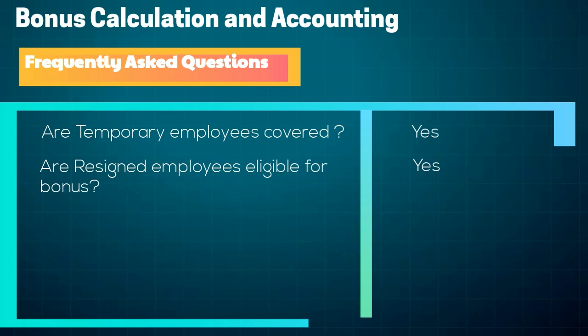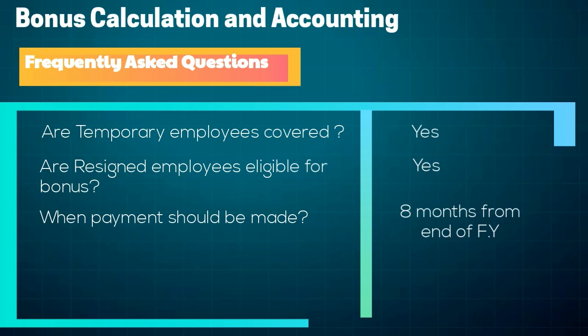Let's see some FAQs. Are temporary employees covered? Yes, they are covered. Are resigned employees eligible for bonus? Yes, they are, for the period they work. When should payment of bonus be made? The payment of bonus for a financial year has to be made within eight months of its completion, thus payment should be made by the end of October of the last financial year.